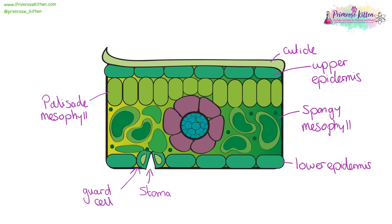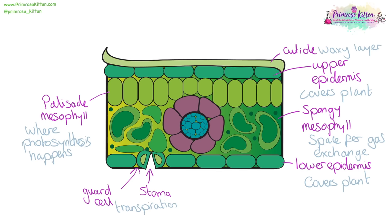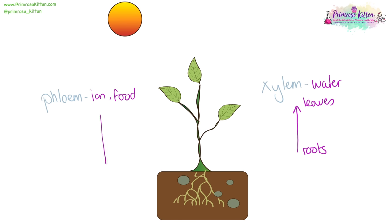Here we have a cross-section of a typical leaf. Our palisade mesophyll is where photosynthesis is going to take place. The cuticle is the waxy layer. The upper and lower epidermis cover the plant. The spongy mesophyll is a space for gas exchange. And the guard cell and stomata is where transpiration takes place. Inside the plant we have the xylem and the phloem. The xylem carries water, generally upwards, from the roots where it is collected to the leaves where it can be used in photosynthesis. The phloem carries ions and food, generally downwards, from the leaf where food is made to the roots where it can be stored, for example in potatoes.